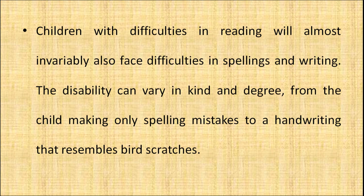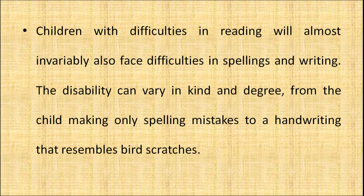Children with difficulty in reading will almost invariably also face difficulties in spelling and writing — so reading, writing, and spelling can all be connected. The disability can vary in kind and degree, from a child making only spelling mistakes to handwriting that resembles bird scratches. For example, spelling mistakes may include omitting letters — like writing 'S-E-N' instead of 'S-E-E-N'. This is where the sound system and phonics come into play.